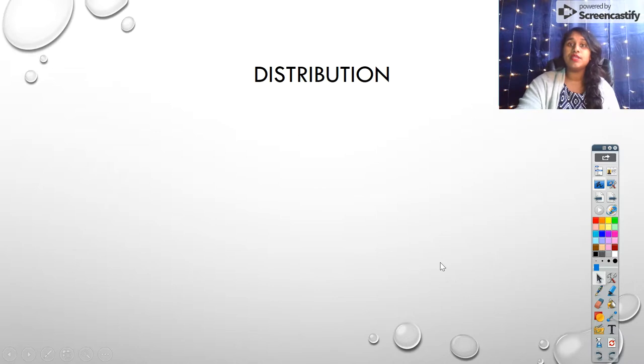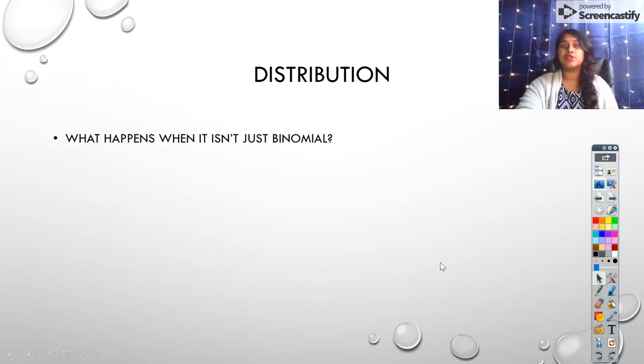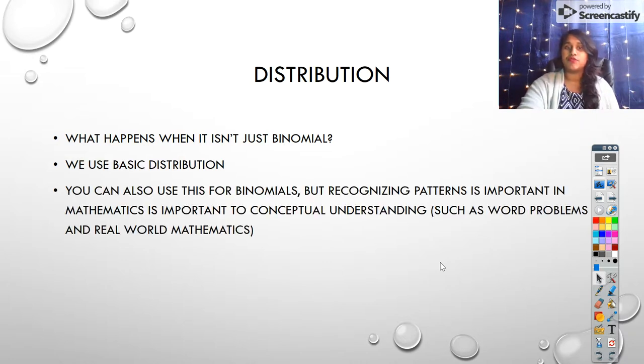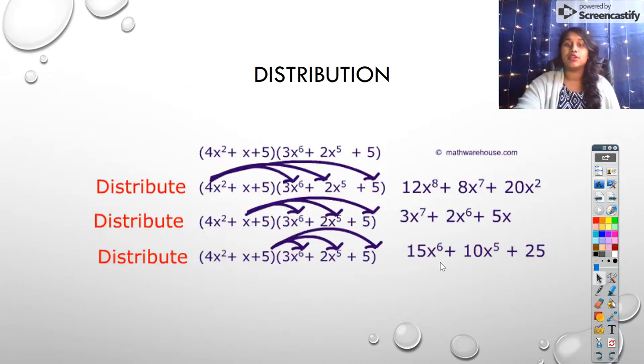The other method we can use if we cannot FOIL would be distribution. So what happens if it's not a binomial? What if it's a trinomial or a monomial, or 4 terms or 5 terms or 10 terms? We just use simple distribution. But the reason we teach FOIL is so that we recognize patterns.